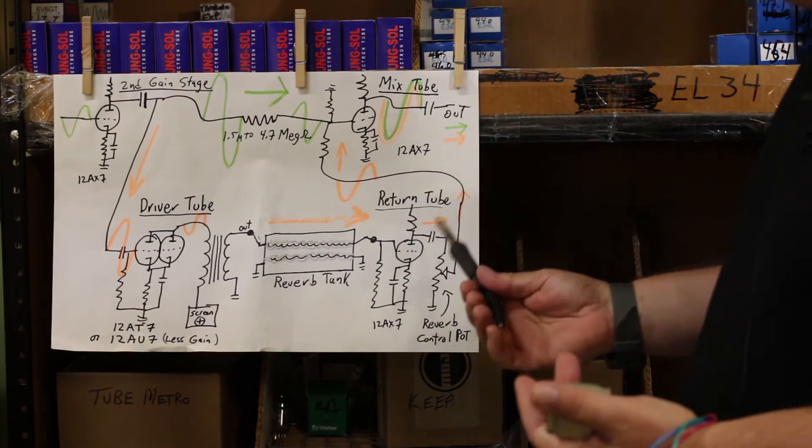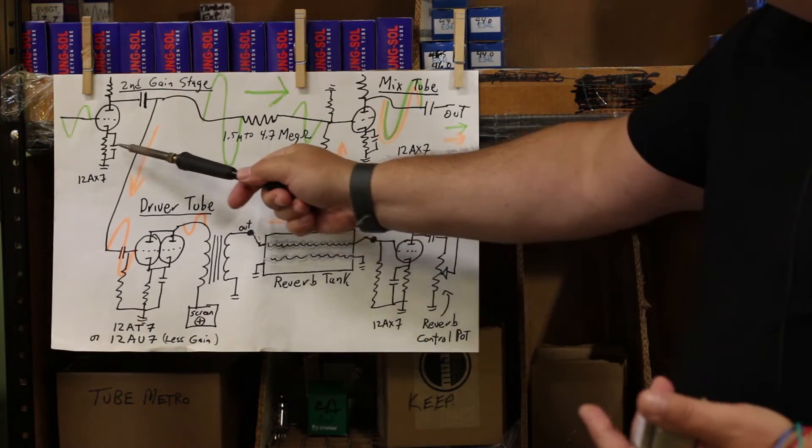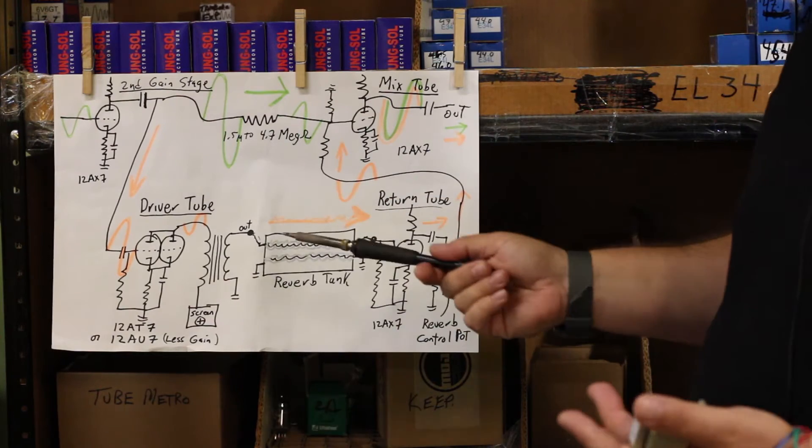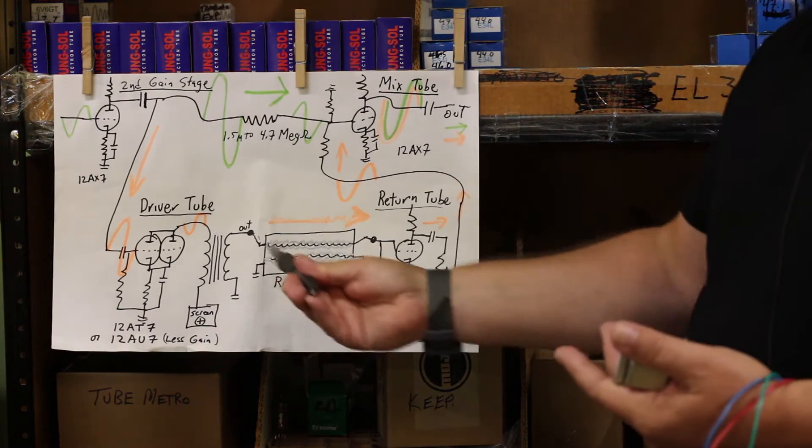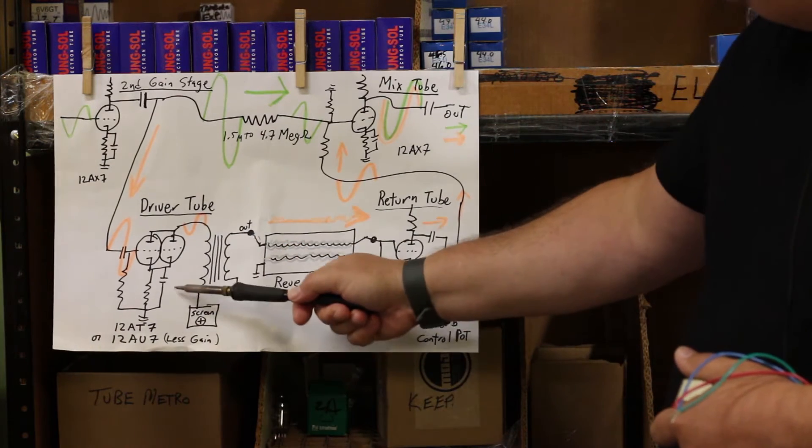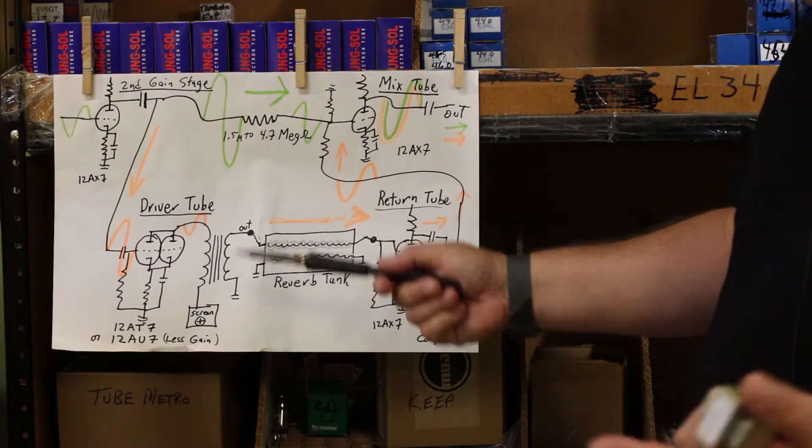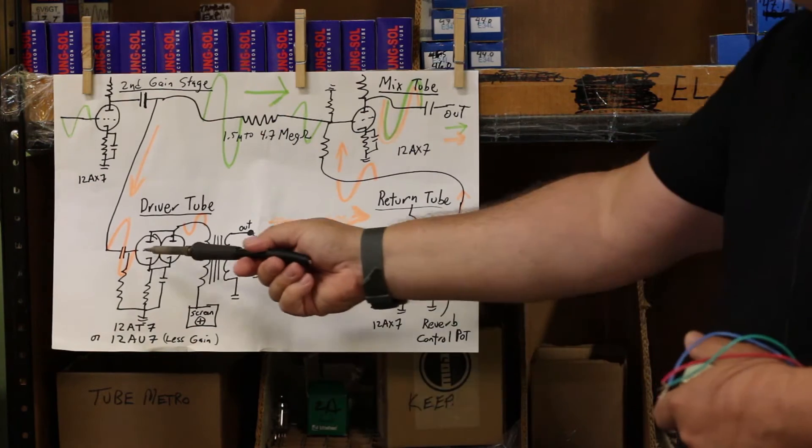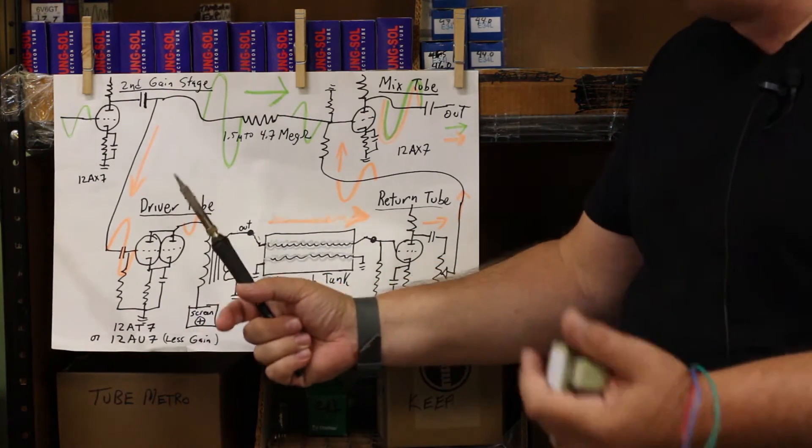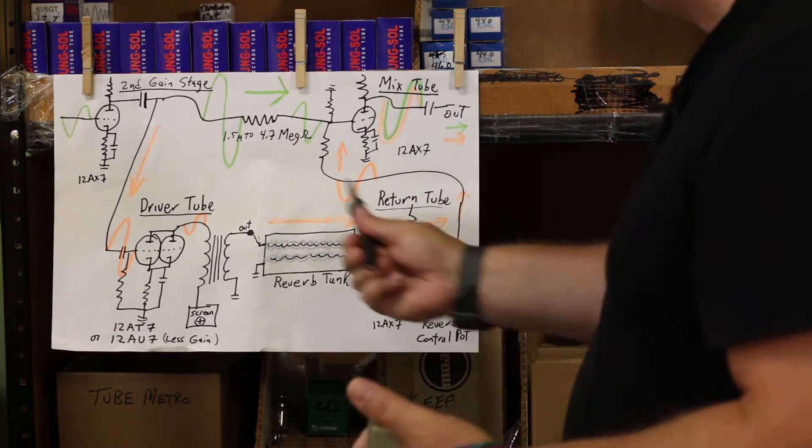Anything you can mod in an amp, all these resistors, capacitors, parts that'll change the frequency response, you can do that in your reverb circuit too. If you want it to be brighter, making that cap smaller, or this cap smaller, will emphasize highs. If you want it fatter, go the other direction. Some of the standalone tanks let you play with some of these parameters.